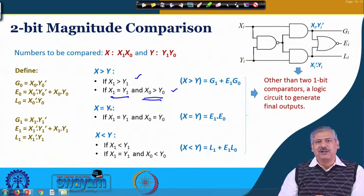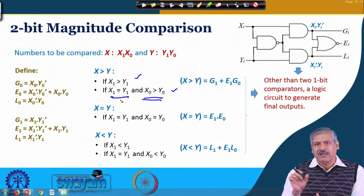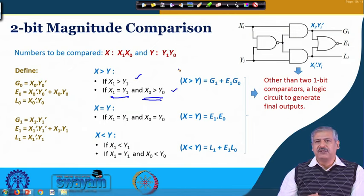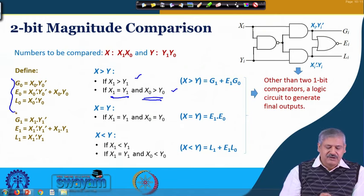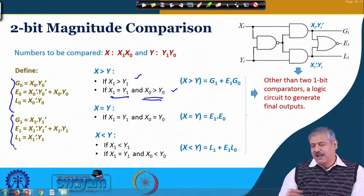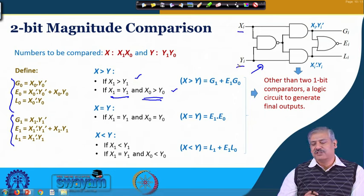So we use two 1-bit comparators. One generates g0, e0, l0 by the same equations we derived, and another generates g1, e1, l1. Instead of x and y, we write xi and yi to indicate bit position. This is the generic 1-bit comparison circuit applied at each bit position.